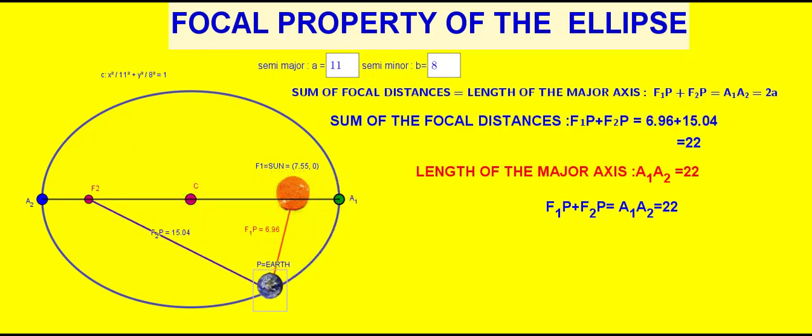For different values of semi-major and minor axis, we will get different ellipse.